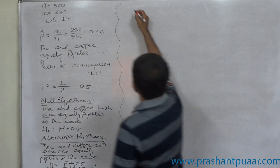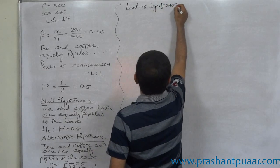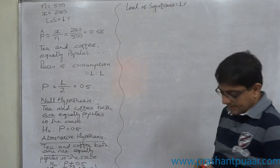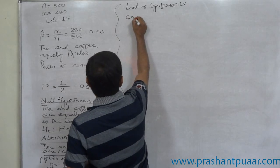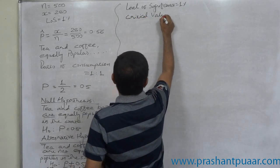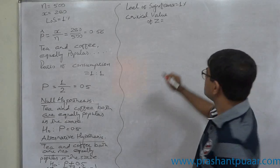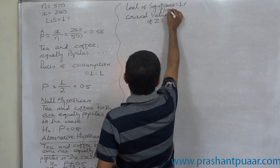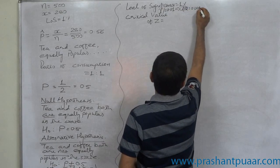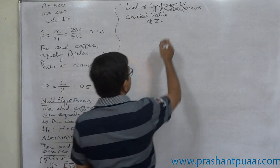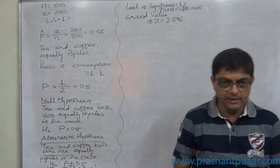Level of significance is given as 1%. Since this is a Z-test, it is the case of infinite degrees of freedom, so we go directly to the critical value of Z. For a two-tail test at 1% level of significance, alpha = 0.01 and alpha/2 = 0.005. The critical value is Z = 2.576, from the last row and last column of the table.